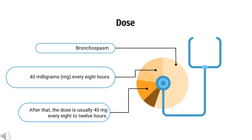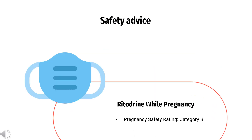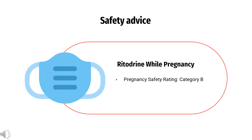Adults (alternative oral dosing): In the first 24 hours after stopping intravenous Ritadrine, the dose may be as high as 10 mg every 2 hours. After that, the dose is usually 10 to 20 mg every 4 to 6 hours. For intravenous administration: 50 to 350 mcg per minute, injected into a vein.